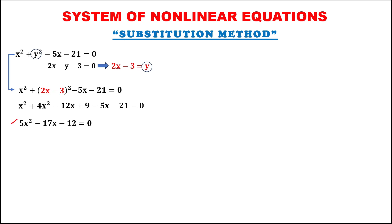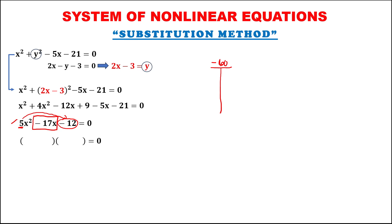So this time, for this quadratic equation, we can use quadratic factoring. Observe that there is a number on the first term, so we can use this method in factoring, or in solving for x. We just need to multiply this number to the last term, so we have 5 times negative 12, which is negative 60. Then we need to find the factors for negative 60 that when we add, the result is negative 17.